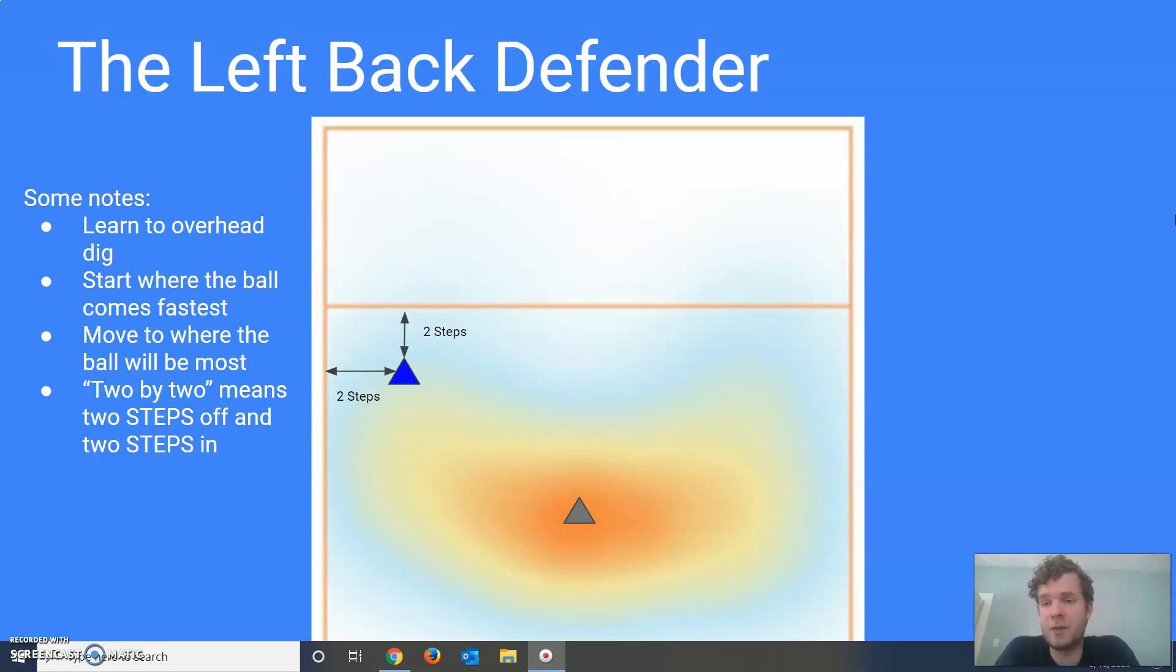So the principle here is we're starting where the ball comes fastest, thus being in a good position to play a fast middle attack, a decent position to play a setter dump, in a good position to defend a really fast shoot to an outside hitter. And so what we'll call this position some of the time is two by two. You can see that in the notes to the left there, which means two steps off and two steps in.